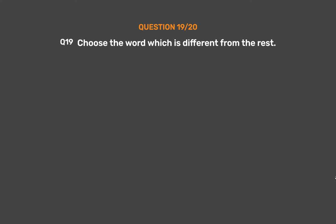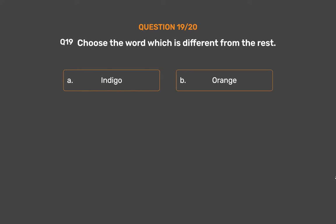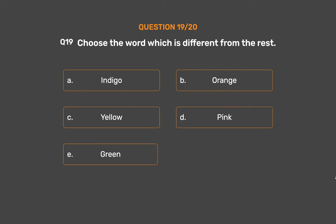Question number 19. Choose the word which is different from the rest. Option A: Indigo. Option B: Orange. Option C: Yellow. Option D: Pink. Option E: Green.